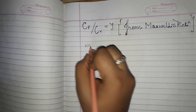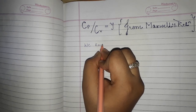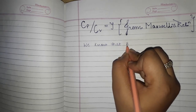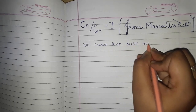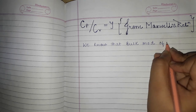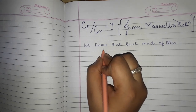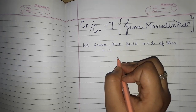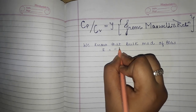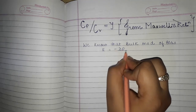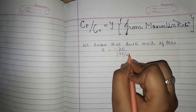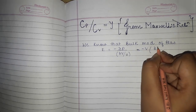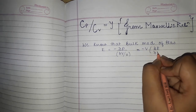We know that bulk modulus of elasticity, let it be E, is longitudinal stress by volumetric strain. So E equals dP divided by (dV/V), which we can write as minus V (dP/dV).